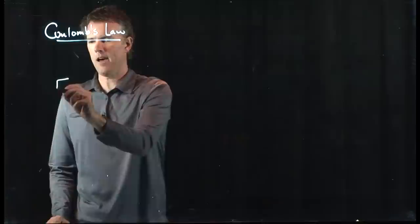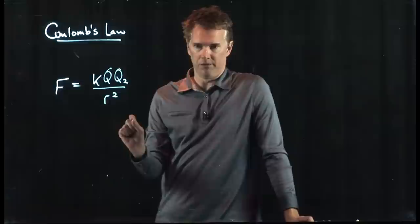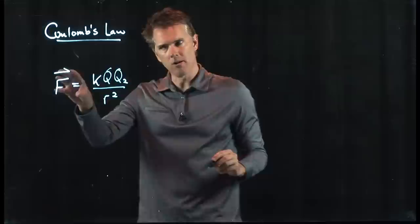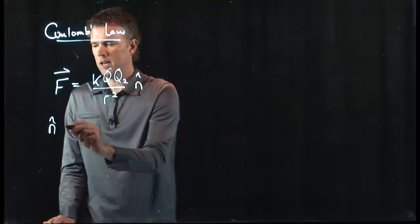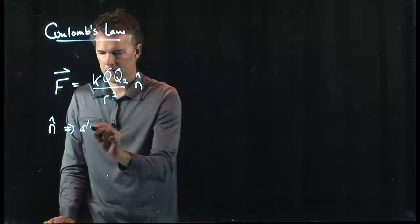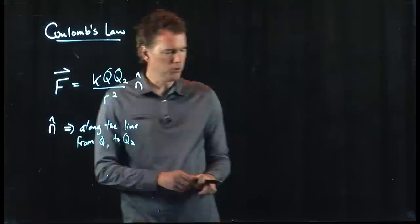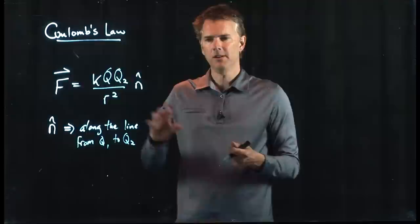Let's write down Coulomb's Law again: F = KQ1Q2 / R². Force is a vector, so we need to put an arrow on top and add a direction on the right side. I'll write it with an N hat: F = KQ1Q2/R² times N hat. N hat is along the line from Q1 to Q2, and you can decide if it's attractive or repulsive, but it's definitely along the line between the two charges.